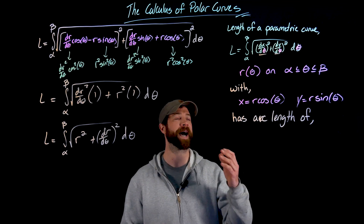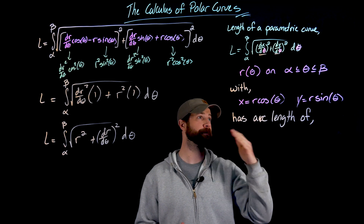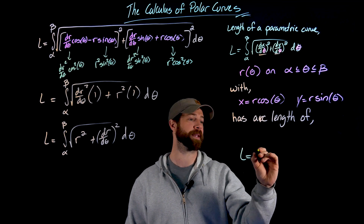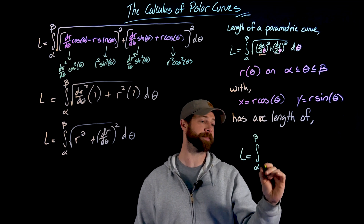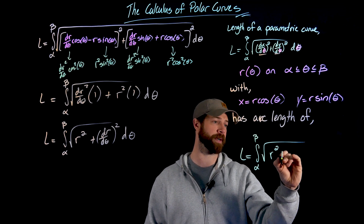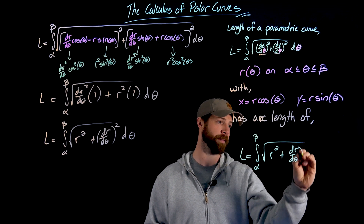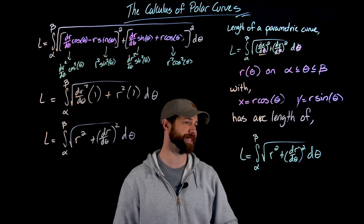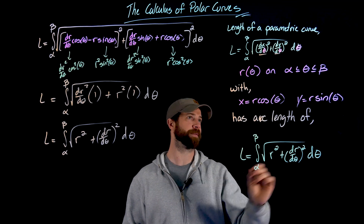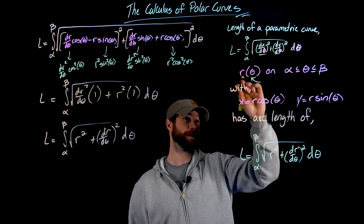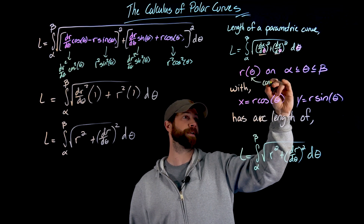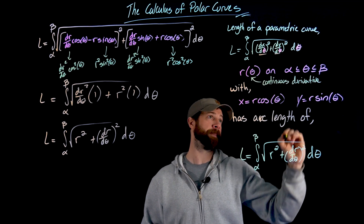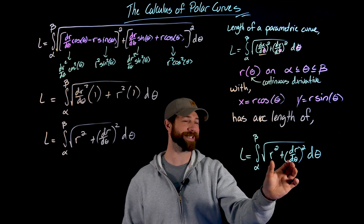To wrap it up: if we have a polar function r(θ) on the interval from alpha to beta, we calculate the arc length with the formula L = integral from alpha to beta of sqrt(r² + (dr/dθ)²) dθ. An important condition is that r must have a continuous derivative, because we need continuous functions inside our integral.